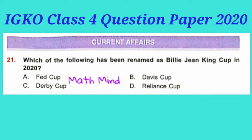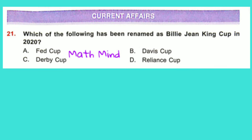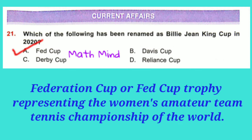Current Affairs. Question No. 21: Which of the following has been renamed as Billie Jean King Cup in 2020? Option A is correct: Fed Cup, also known as Federation Cup — the Federation Trophy representing the Women's Amateur Team Tennis Championship of the World.